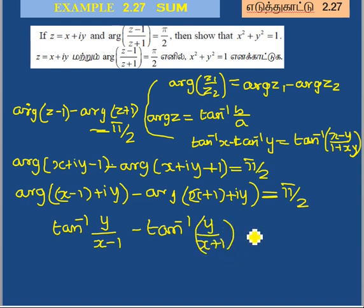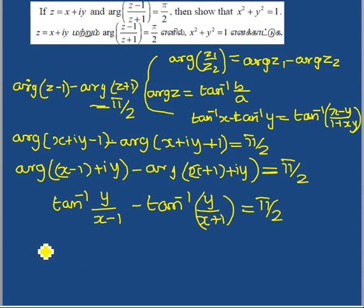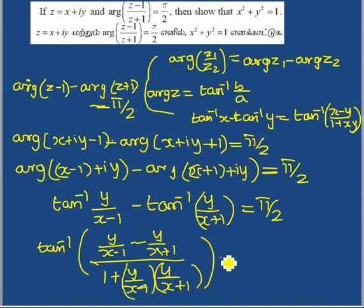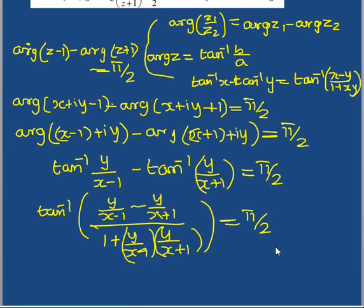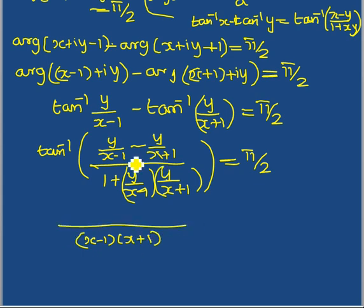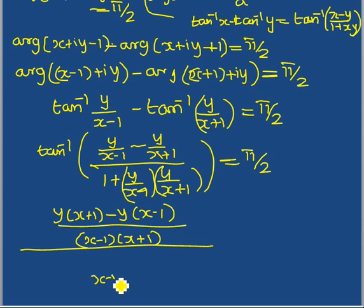Applying the third formula for tan inverse of A minus tan inverse of B: tan inverse of [Y/(X minus 1) minus Y/(X plus 1)] divided by [1 plus Y/(X minus 1) times Y/(X plus 1)] equals π/2. Taking LCM on the numerator: (X minus 1) times (X plus 1).